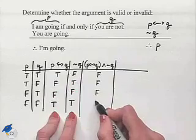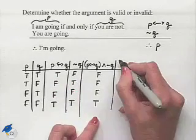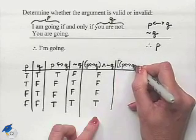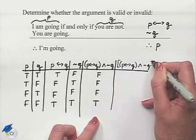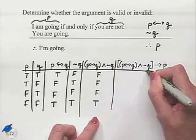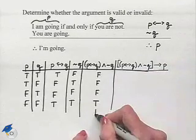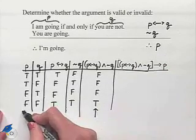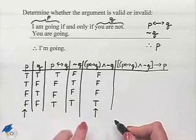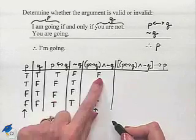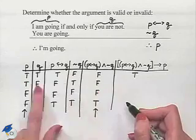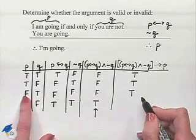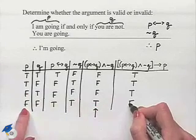False, true AND true gives us true. Now we want to see whether or not these two premises put together in this manner will imply the conclusion P. So we look at the last column we filled in as the 'if' portion and the first column P as the 'then' portion. We have: if false then true — that's true; if false then true — true; if false then false — true; if true then false — false.